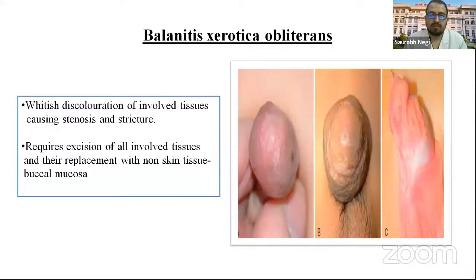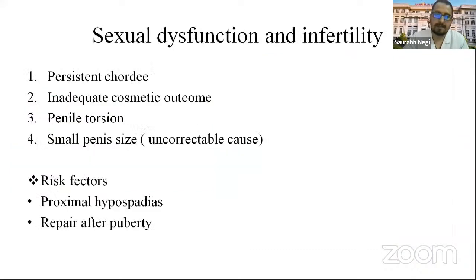Balanitis xerotica obliterans involves white discoloration of involved tissue causing stenosis or stricture. It requires excision of all involved tissue and replacement with non-skin buccal mucosa. Sexual dysfunction and infertility are related to persistent chordee, inadequate cosmetic outcome, penile torsion, and small penis size. Risk factors include more proximal hypospadias and repair after puberty.